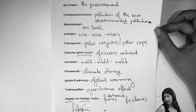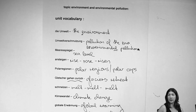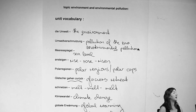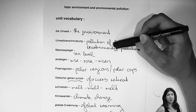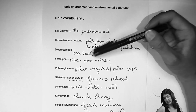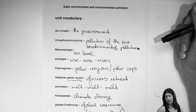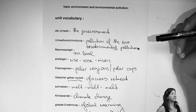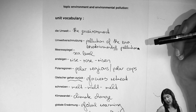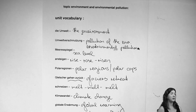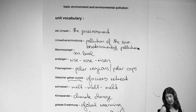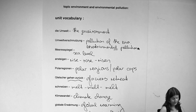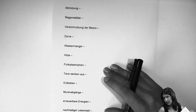Let's have a quick look at the words again: environment, pollution of the environment — make sure it's spelled 'environment' — environmental pollution, make sure you have the 'a' and 'l.' Sea level, to raise, polar regions, polar caps, to retreat for 'zurückgehen.' Climate change, global warming, the greenhouse effect, and exhaust fumes caused by factories and cars.